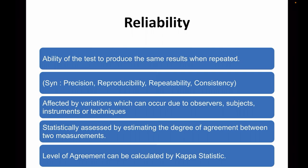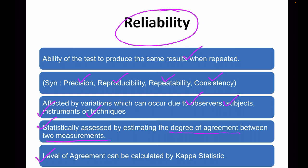Before going on to the kappa statistic, we should understand the concept of reliability first. Reliability is defined as the ability of the test to produce the same results again and again when it is repeated. It is otherwise called as precision, reproducibility or repeatability, consistency or concordance. Usually, study results are affected by variations from the observers, the subjects themselves, the instruments, or differences in techniques. Reliability is the ability of the test to reproduce the same results again and again. Statistically, this is done by estimating the degree of agreement between two measurements, which can be calculated by the kappa statistic.